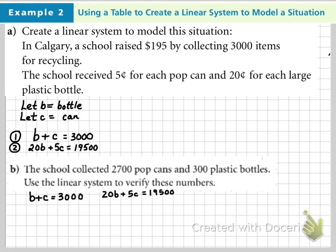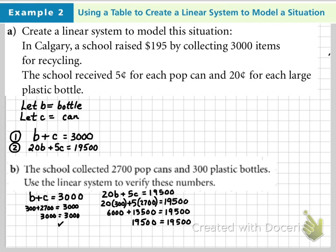And 20B plus 5C is 19,500. We can say 300 plus 2,700, or 3,000 equals 3,000. And 20 times 300 plus 5 times 2,700 means that both sides of this equation are going to add up to 19,500.